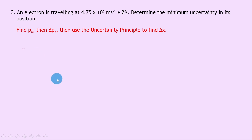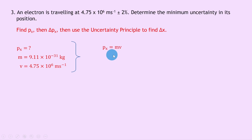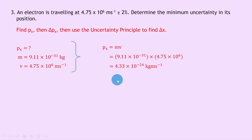Starting by finding the momentum in the x direction: the mass of the electron is 9.11 times 10 to the minus 31 kilograms from the datasheet, and the speed v is 4.75 times 10 to the 6 meters per second. Using the equation for linear momentum px equals mv, substituting in the numbers gives 9.11 times 10 to the minus 31 times 4.75 times 10 to the 6, which gives 4.33 times 10 to the minus 24 kilogram meters per second.